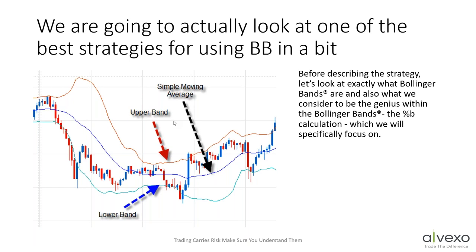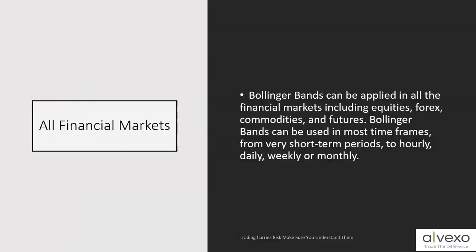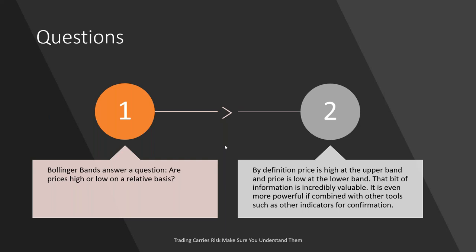Before describing the strategies that look at Bollinger Bands, we have to understand what these bands are on our charts. Bollinger Bands can be applied in all financial markets including equities, forex, commodities, and futures. They can be used in most time frames — from very short-term periods to hourly, daily, weekly, and monthly. Bollinger Bands is one of the few indicators that adjusts quickly to very short time frames. Bollinger Bands answers a very simple basic question: are prices high or low on a relative basis?